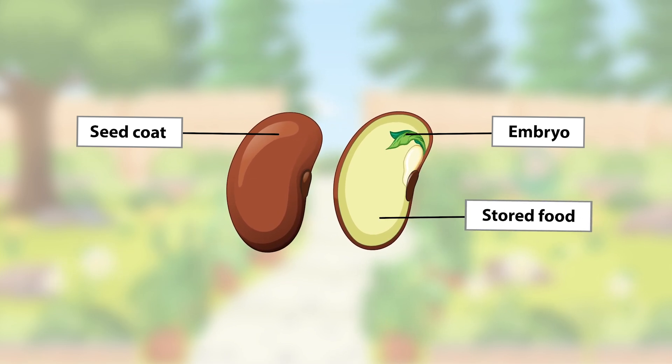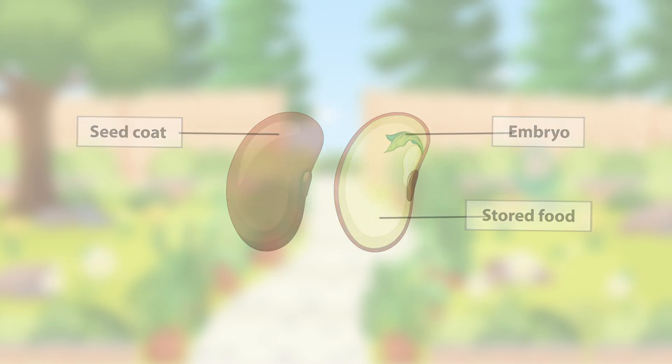Alongside the embryo is stored food, like a packed lunch, ready to give the young plant the energy it needs to begin growing.